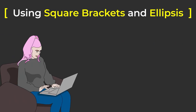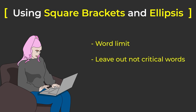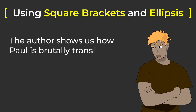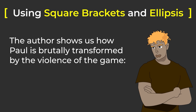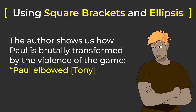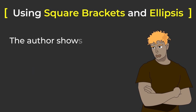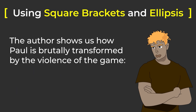We don't need every word from the original sentence or paragraph — you're not getting paid by the word. In fact, you've probably got a word limit. You can leave out words or phrases that are not critical to the point you want your quotation to support. However, you need to show that you've left something out by using ellipsis marks in place of whatever you have left out. For example: "The author shows us how Paul is brutally transformed by the violence of the game. 'Paul elbowed [Tony] in the head and didn't think twice...'"